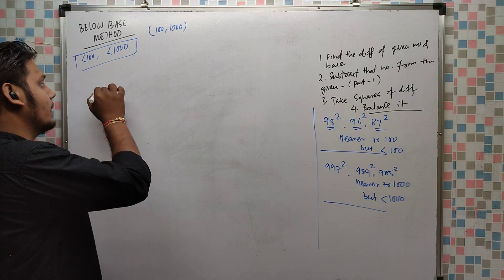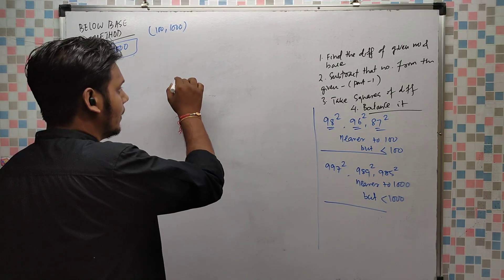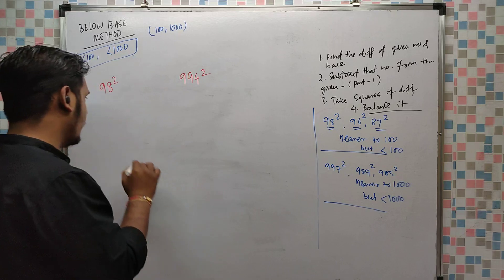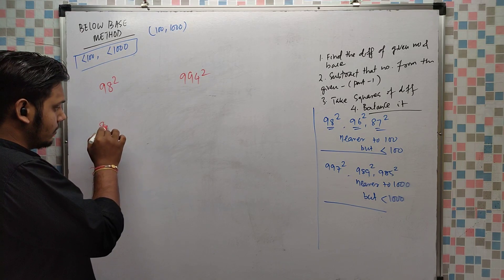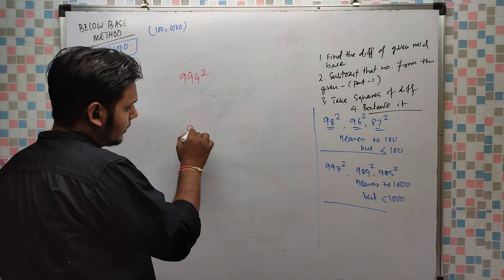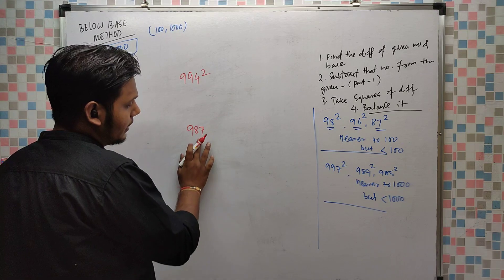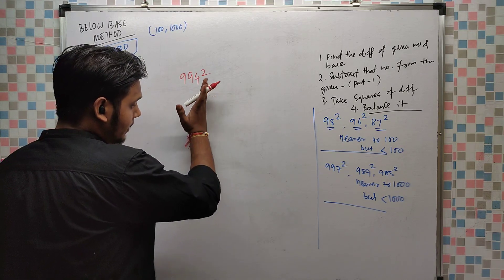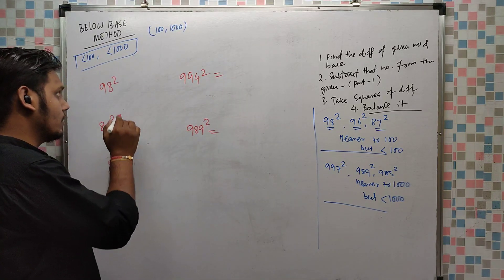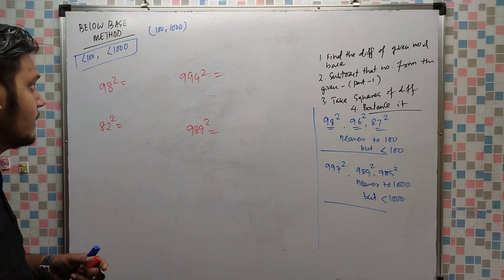Now let's solve some practice problems: 98², 82², 994², 989². These 4 numbers are given. Let's do them in a single step.